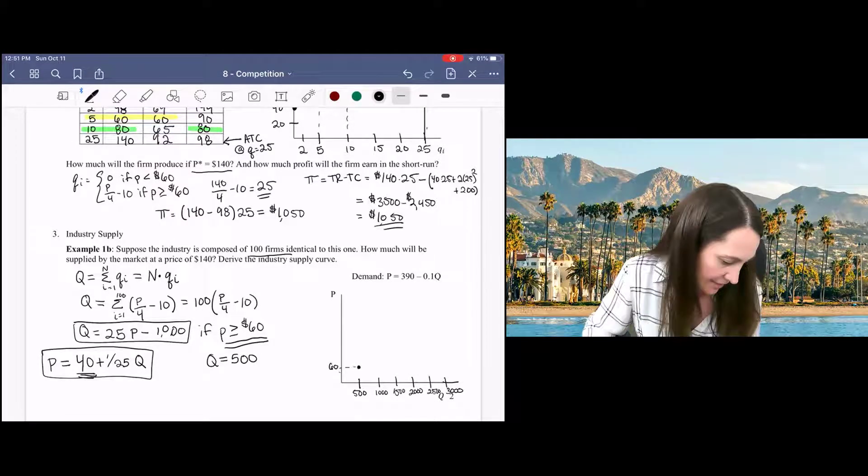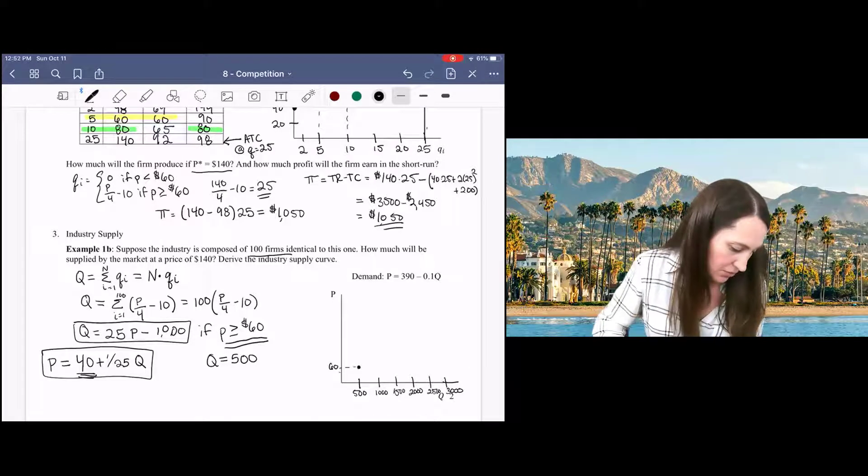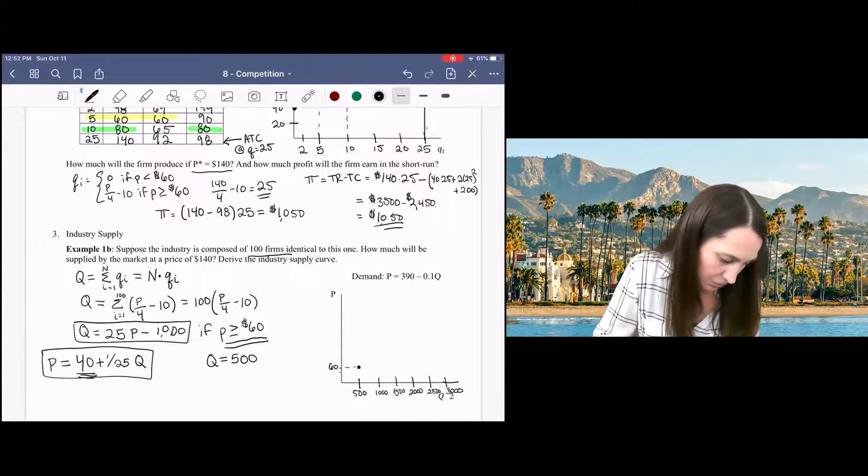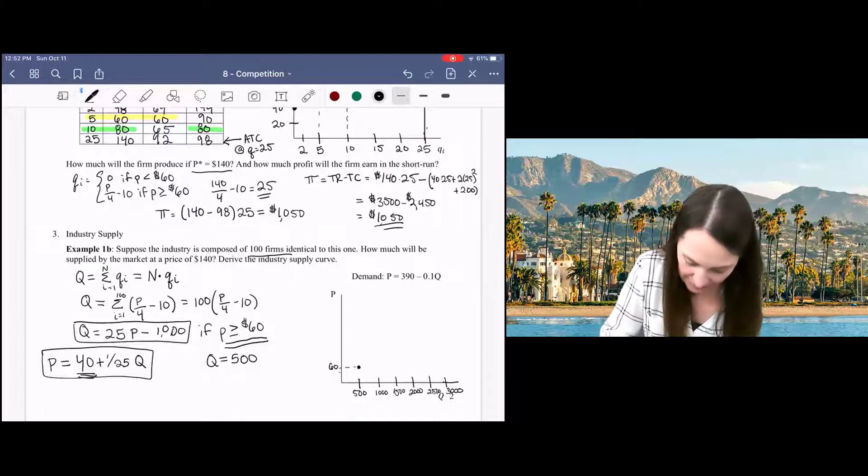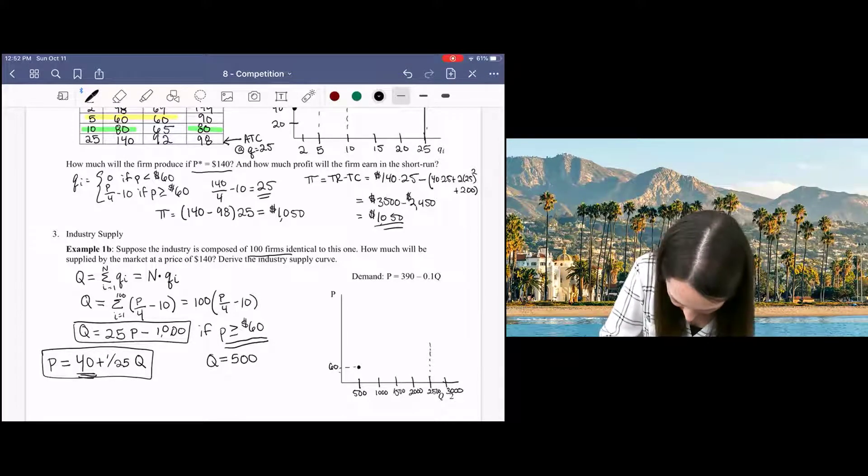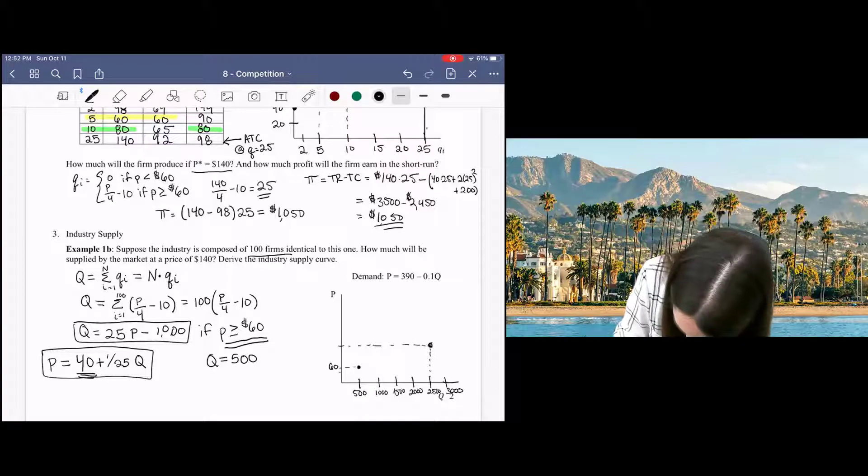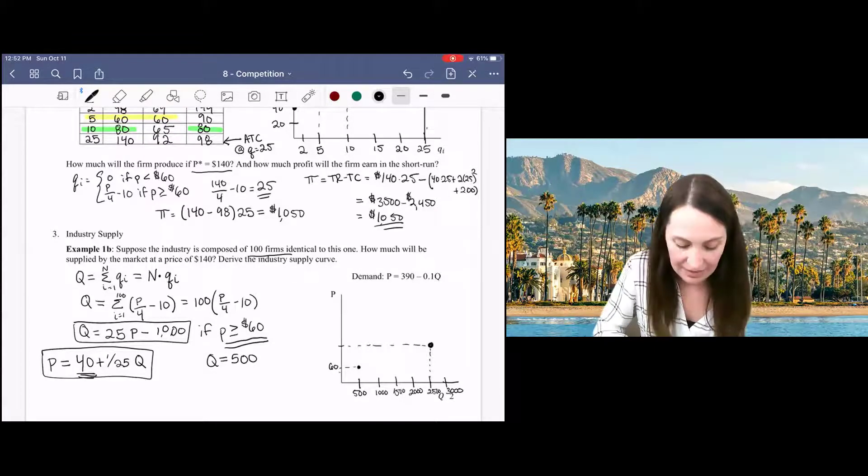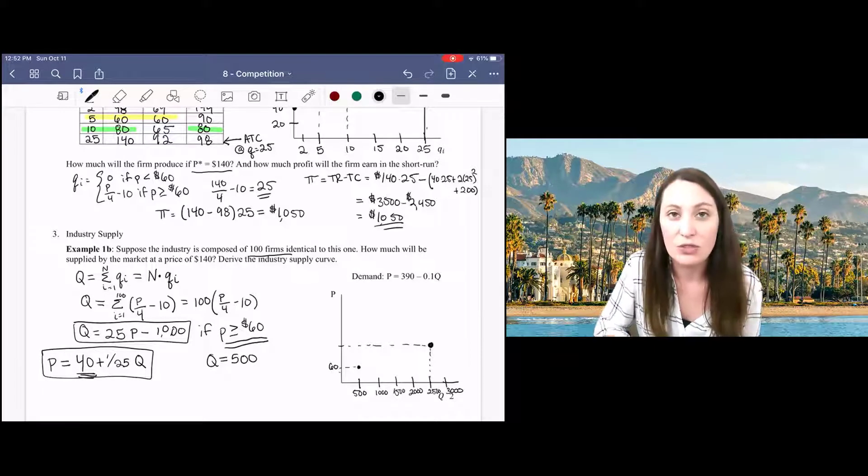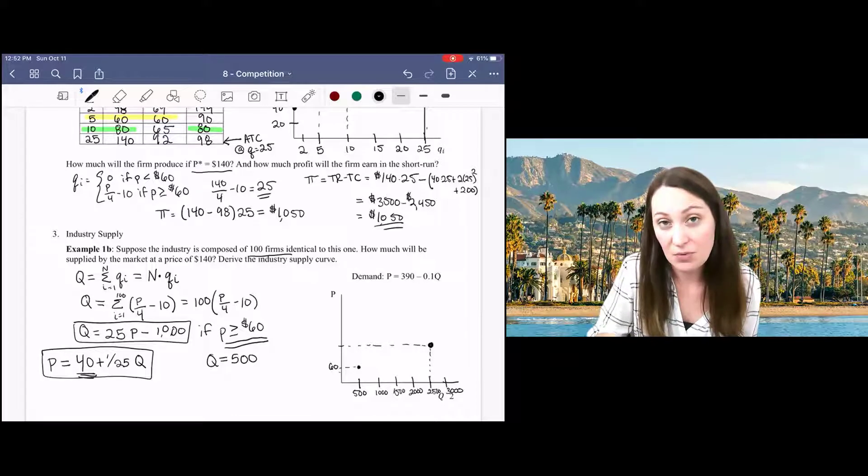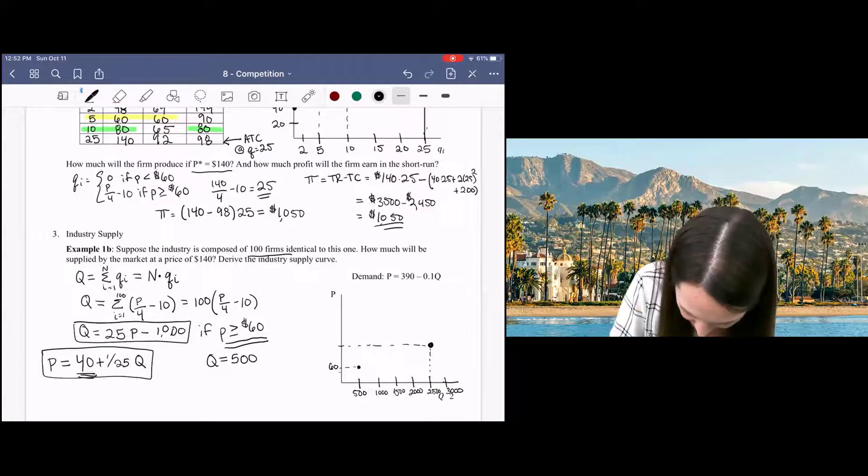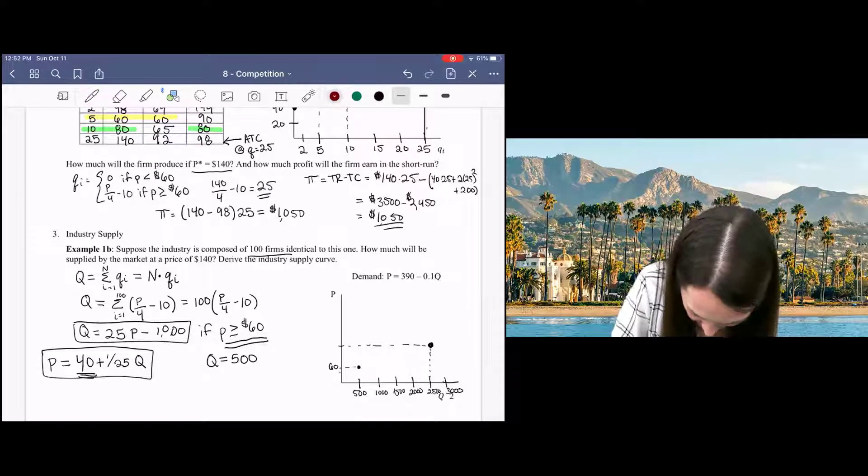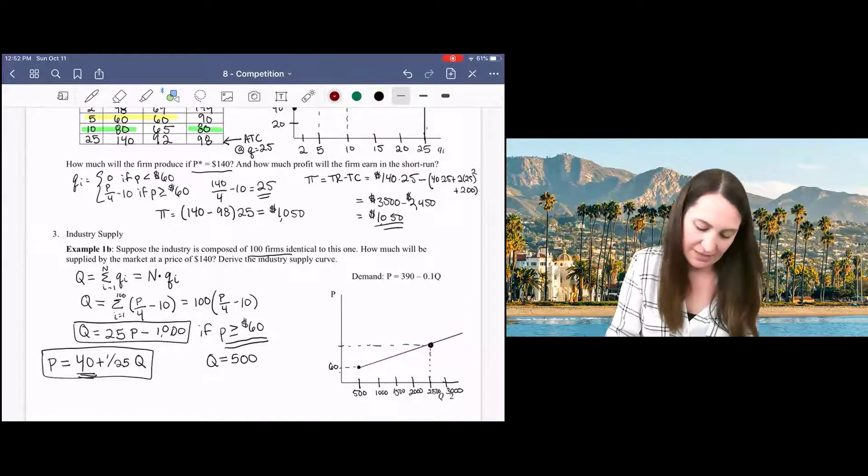And then it will go up so that we have at a price of 140, which was our equilibrium, we get a quantity of 2,500, right? The equivalent of 25 supplied by each individual firm times 100. So we get a market supply curve that looks something like this.